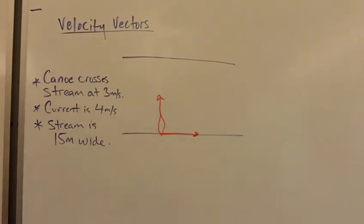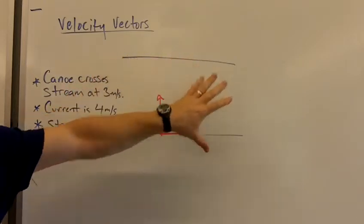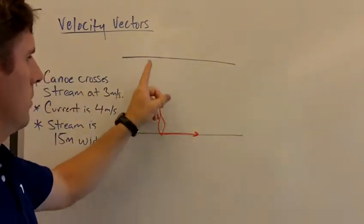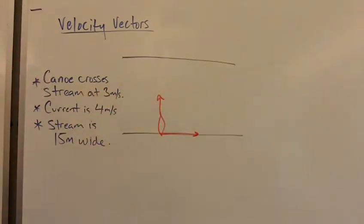Okay, we've had some questions about velocity vectors. This is another one we've done early in the year. Here is a river with a current flowing in this direction. We've got a canoe crossing the river and we're given three pieces of information.